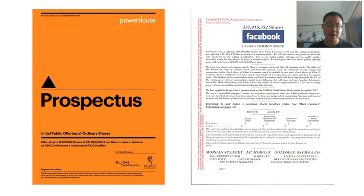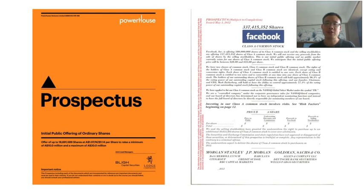This is a prospectus — a very thick book of all financial and related information about a company going through the IPO process. You will likely be required to read prospectuses and other financial statements including balance sheets and cash flow statements to collect data. Of course you will not collect it by hand — you will collect data sources using a web scraping program that you write yourself. That will be covered in the later part of this course.